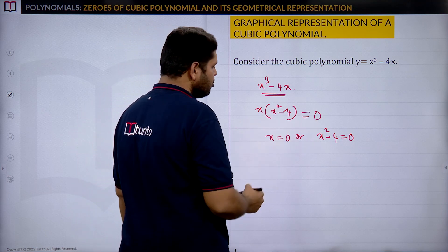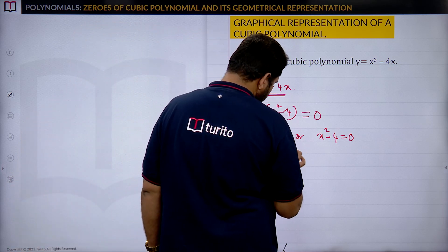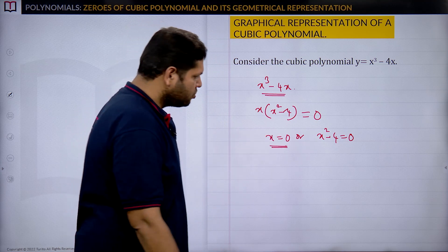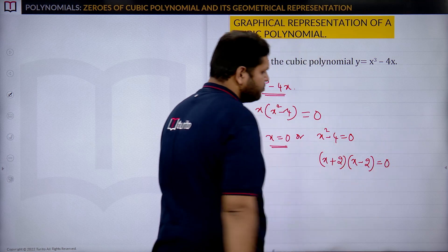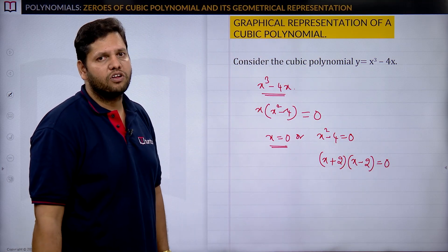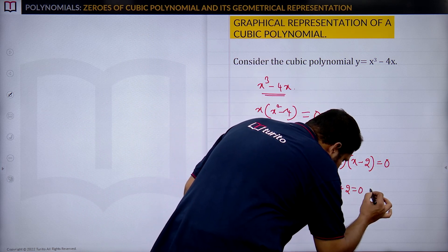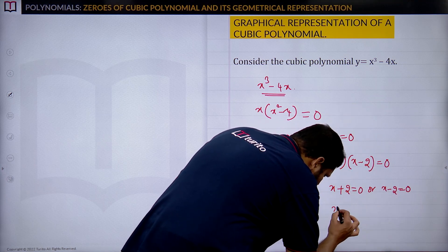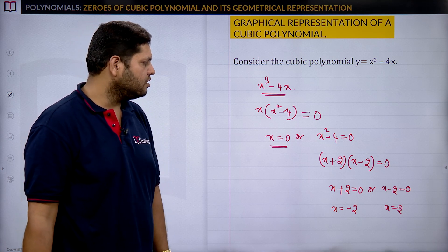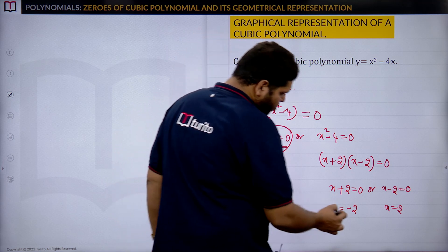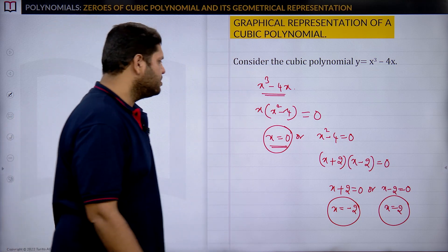Since the product equals zero, either x = 0 or x² − 4 = 0. Applying the difference of squares formula, x² − 4 = (x + 2)(x − 2) = 0, giving x = −2 or x = 2. So we get three zeros: x = 0, x = −2, and x = 2.